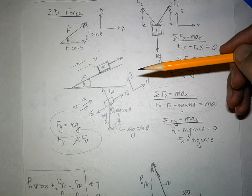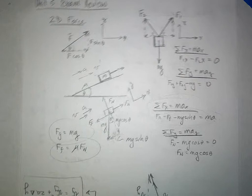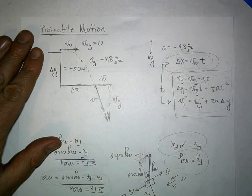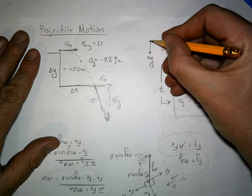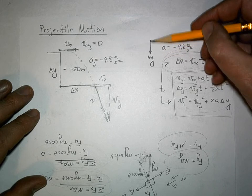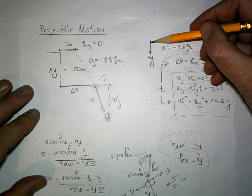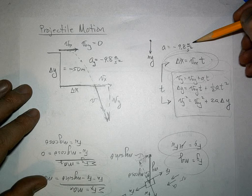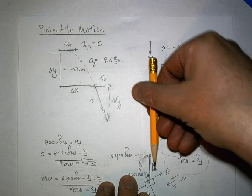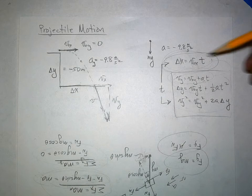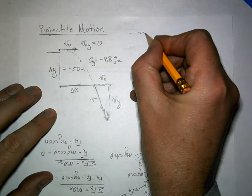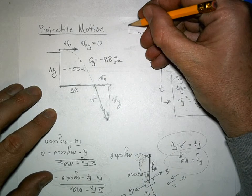The next type of problem on the test is projectile motion. Projectile motion means an object has been thrown but is only under the influence of gravity — the acceleration is negative 9.8 meters per second squared downward. We make x to the right and y upward for our axis system.